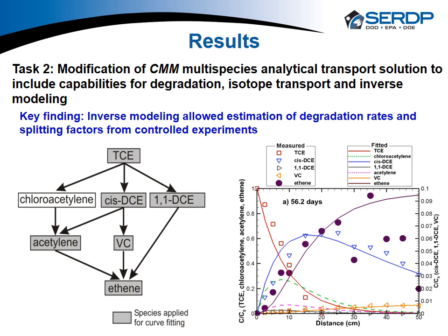Task 2 results show an example from the analytical multi-species transport model CMM applied to a column experiment involving granular iron to speed up degradation. The concentration profiles were measured at different times for multiple column experiments. By coupling the analytical solution to an inverse modeling approach, we could determine the degradation splitting factors and half-lives for the degradation process. A paper on this topic is in preparation for submission to the Journal of Contaminant Hydrology.